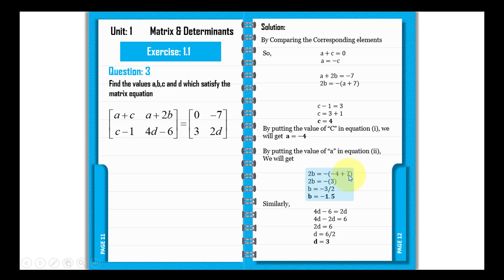We get 2b equals minus into minus 4 plus 7, giving us minus 3. When 2 divides, b equals minus 3 over 2, or minus 1.5.